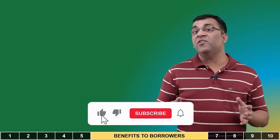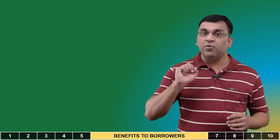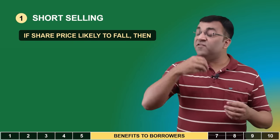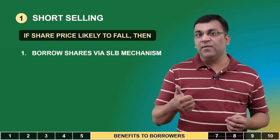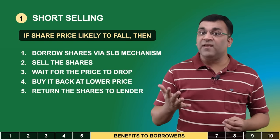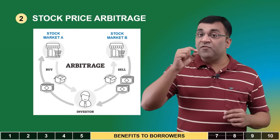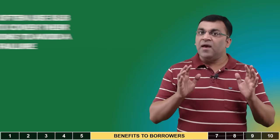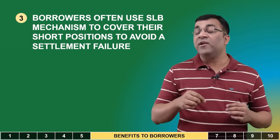Anyone who borrows shares has spotted some opportunity in the market, and there are typically three scenarios a borrower chases. Firstly, short selling: if the borrower deduces that a share price is about to fall, they borrow the stock via SLBM, short it, wait for the price to drop, buy it back, return the shares, and pocket the earnings. The second technique is stock price arbitrage: if the price of a share differs across two exchanges, the borrower can use SLBM to make quick money. Thirdly, borrowers often use SLBM to cover short positions in order to avoid a settlement failure.